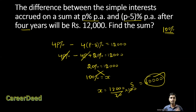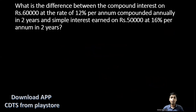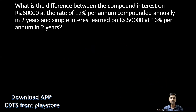Moving to question number two: What is the difference between the compound interest on rupees 60,000 at 12% per annum compounded annually for two years, and the simple interest earned on rupees 50,000 at 16% per annum for two years?